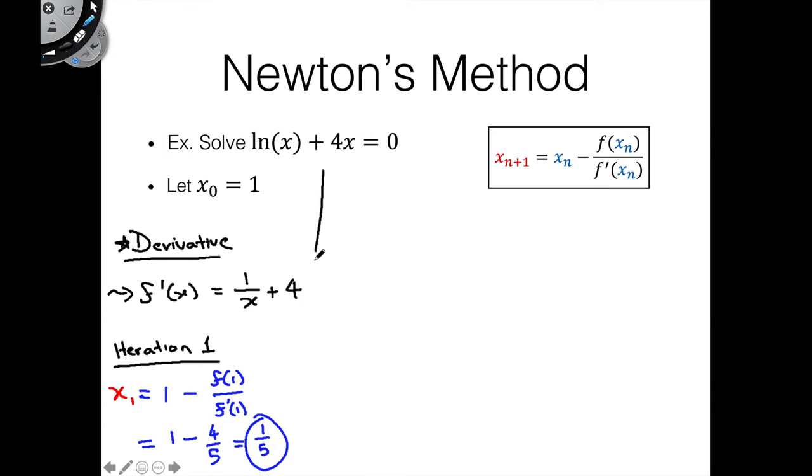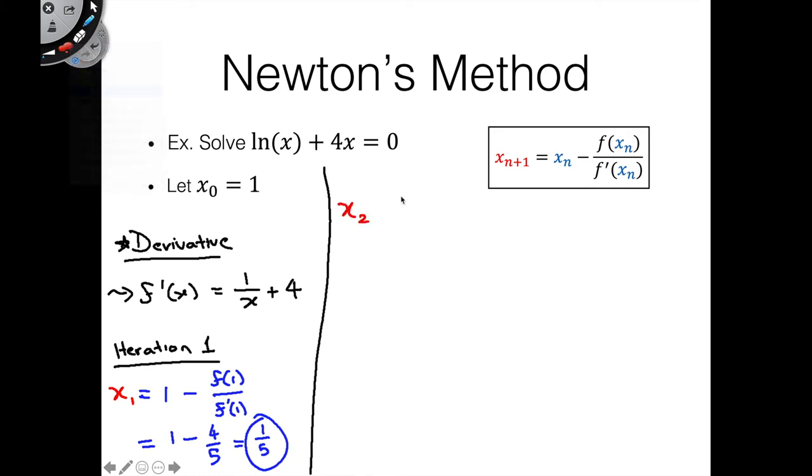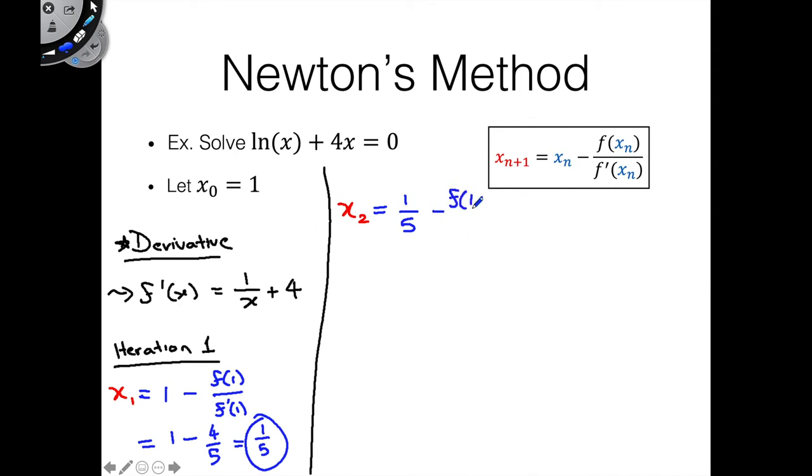Next thing we can do, we will run our second iteration. And we're going to use x_1 in our second iteration. So we'll say, x_2 is going to be equal to, x_1 now is going to be the guy we plug in, so we'll be 1/5, minus f(1/5) over f'(1/5).